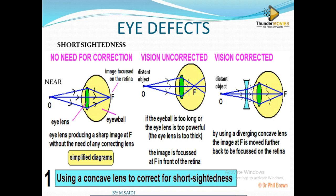Why can't short-sighted people see far objects? The image is formed in front of the retina — not on the retina itself. The light is not strong enough to reach the retina, or the lens is too powerful and bends the light before it reaches the retina. The causes are: the eyeball is too long, or the lens is too powerful.